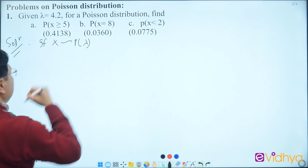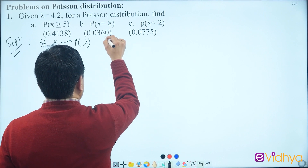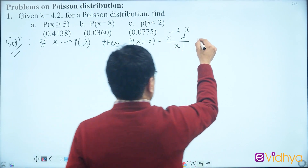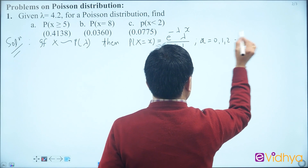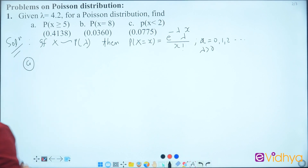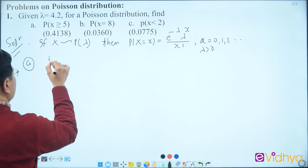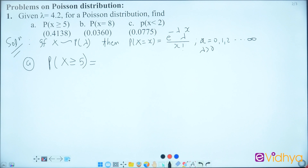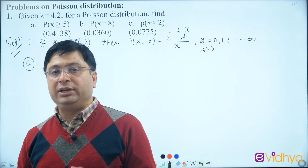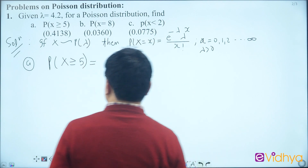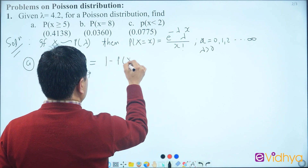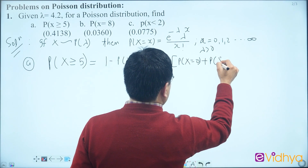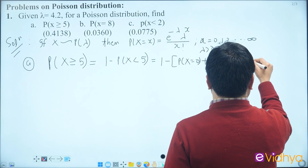If X follows Poisson distribution P(lambda), where lambda is the average value, then its probability mass function is P(X = x) = e to the power minus lambda times lambda to the power x divided by x factorial, where X = 0, 1, 2, ... and lambda must be finite. Now, what is the probability of X greater than or equal to 5? P(X ≥ 5) = 1 minus P(X < 5).